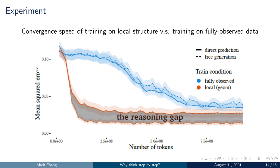The next experiment compares the convergence speed of training on local observations versus full observations. The results show that as the number of tokens fed into the model during training increases, training on local observations converges much faster than training on full observations, suggesting that training on local observations is more data efficient. Therefore, if we aim to use less training data, breaking down the data into smaller local contexts can improve both accuracy and convergence speed. Additionally, inference through free generation of intermediate variables yields more accurate results than direct prediction.